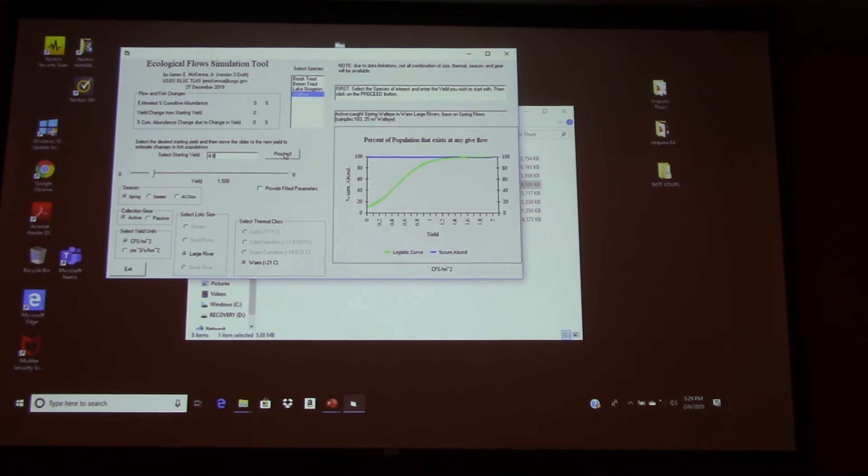You'll see your curves about in the middle. So this is a spring example where we have a lot more flow and if our reference point is in the middle, we're supporting about 60% of the fish.